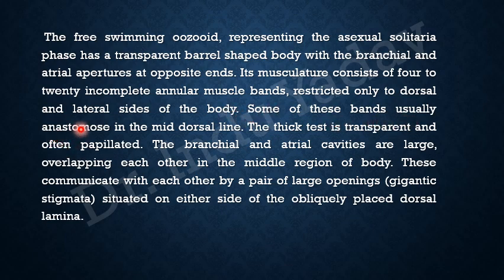Some of these bands usually anastomose in the middle. The thick test is transparent. The branchial and atrial cavities are large, overlapping with each other in the middle region of the body. These cavities communicate with each other by a pair of large openings known as gigantic stigmata, situated on either side of the obliquely placed dorsal lamina.